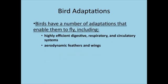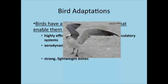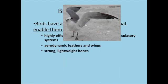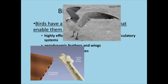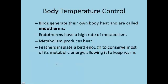Adaptations for flight include a highly efficient digestive, respiratory, and circulatory system — birds are using a lot of energy flying, so they don't want to expend extra energy on digestion, breathing, and pumping blood. They also have aerodynamic feathers and wings, and strong, lightweight bones. Here's an example of the inside of bird bones — you can think of it like corrugated cardboard; that's how lightweight and hollow those bird bones are. Birds are endotherms, so they have a high rate of metabolism which produces heat, and their feathers conserve energy and keep them warm.